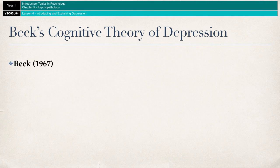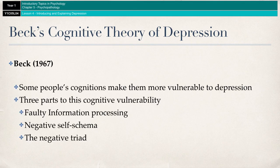Beck's cognitive theory of depression was put forward by Beck in 1967. Beck believed that some people's cognitions — their thoughts — make them more vulnerable to depression. He said there were three parts to that vulnerability: faulty information processing, something called negative self-schema, and then those two things together work to fuel something called the negative triad. We're going to go through all three of those now.